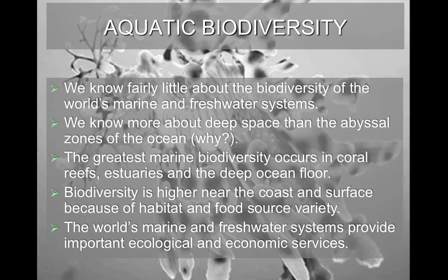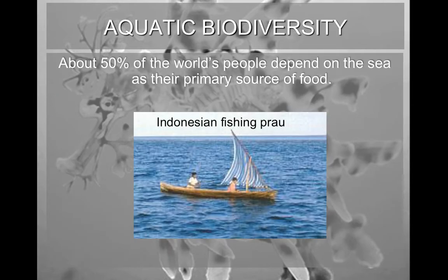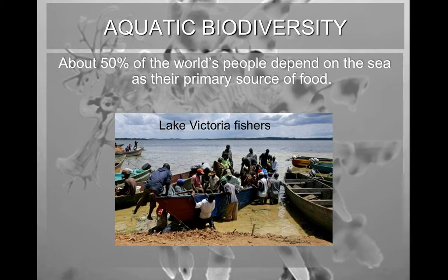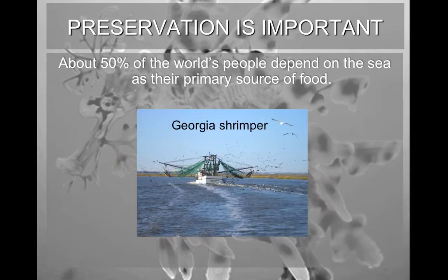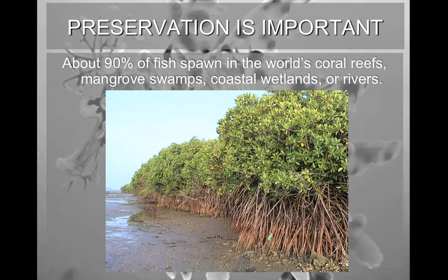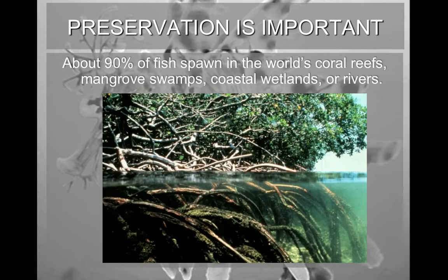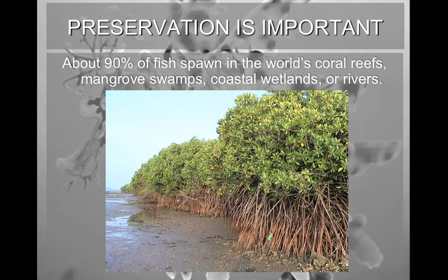The world's marine and freshwater systems provide ecological and economic services — they are very important. In fact, 50% of the world's people depend on the ocean as their source of food. This is an example of a fishing proa in Indonesia, fishers found in Lake Victoria, and a Georgian shrimp trawler, which trawls the bottom and pulls up shrimp for consumption. Approximately 90% of the fish in the world spawn in coral reefs, mangrove swamps, coastal wetlands, or rivers.